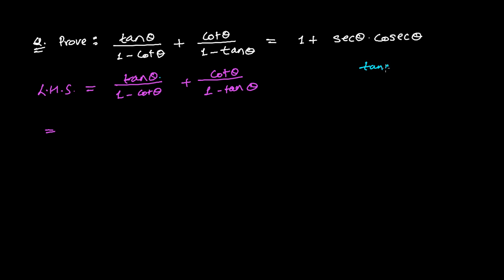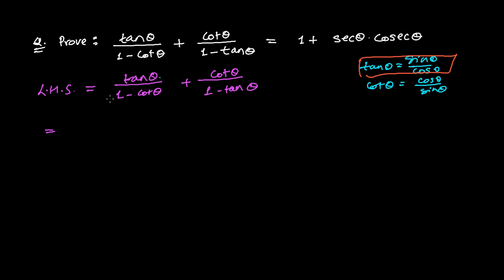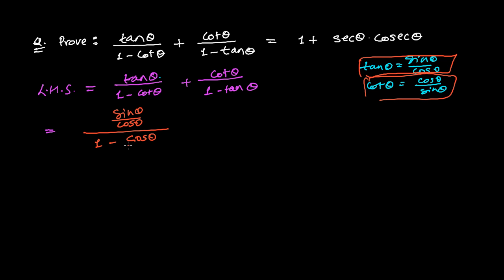Everybody knows that tan theta is the ratio of sine theta over cos theta, and cot theta is just the reciprocal of tan theta, that is cos theta over sine theta. I'm going to use these two things. So this tan theta I can write as sine theta over cos theta, and for cot theta I write cos theta over sine theta.